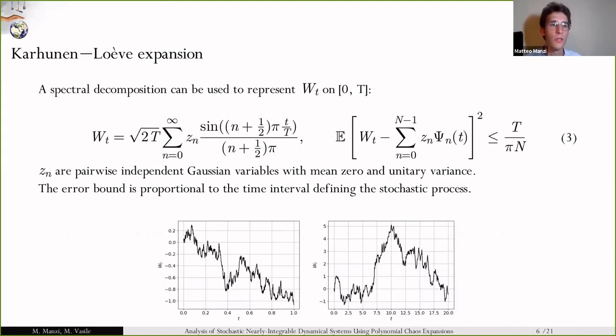We start tackling the stochastic process by decomposing it using the Karhunen-Loève expansion, which allows to decompose a Wiener process on a time interval. You can see that the time dependence is decomposed from the stochasticity. In fact, Zn are pairwise independent Gaussian variables with zero mean and variance one. Using this approximation with the first 400 terms, we were able to represent two realizations of two different Wiener processes defined on 0,1 and 0,20. Because we need to truncate this series, it's important to notice that the error is proportional to the time interval over which we are approximating the stochastic process. We will use this fact later on.